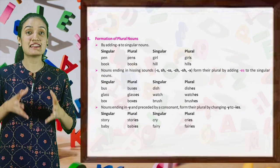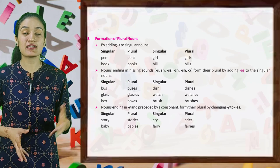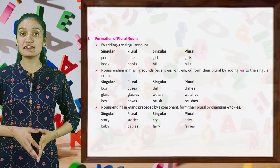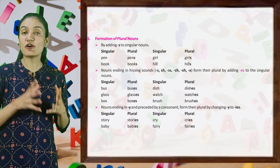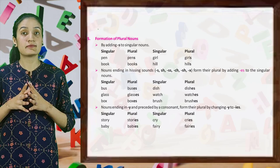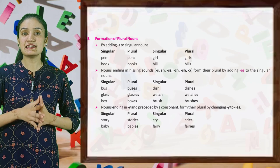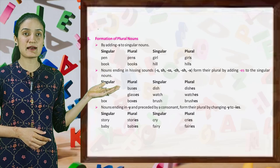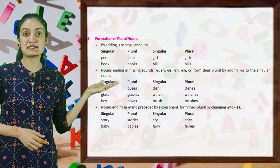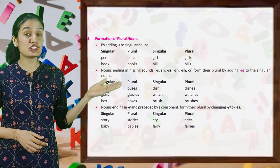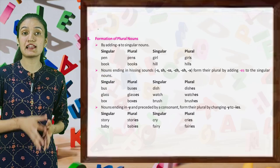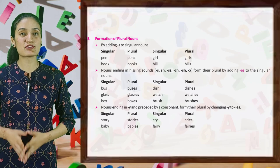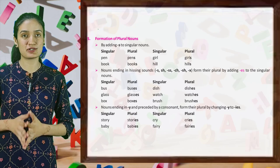Nouns ending in a hissing sound — S, SS, SH, CH, X — form their plural by adding ES to the singular noun. Let's see the examples: bus → buses, dish → dishes, glass → glasses, watch → watches, box → boxes, brush → brushes.